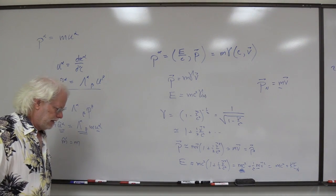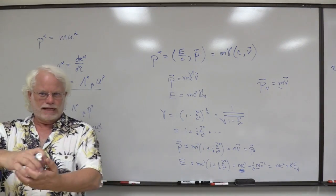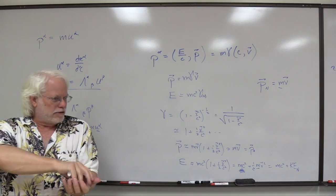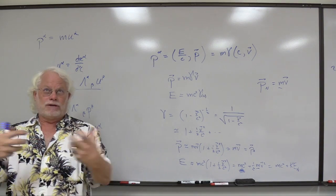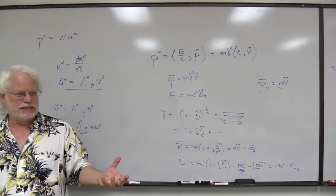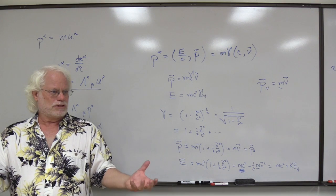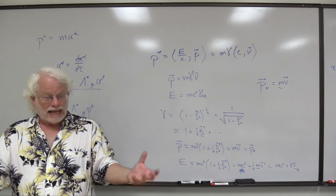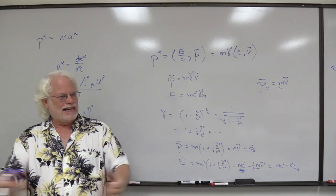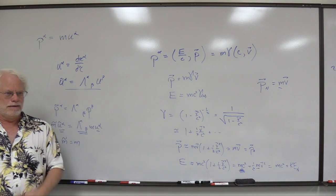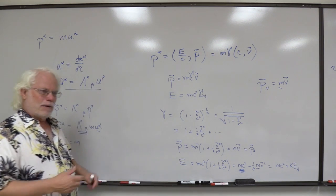When a uranium atom — which has a stable enough energy content counting the binding energy and the mass energy — splits into krypton and barium or something, the mass of those two final atoms together is less than the mass of the uranium. The difference is made up in the kinetic energy of a few neutrons and the product atoms. So you have this overall energy balance, but you have to count binding energy.